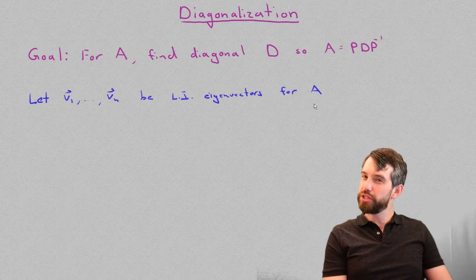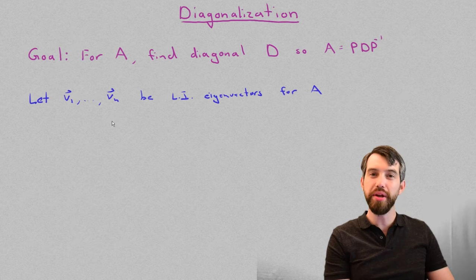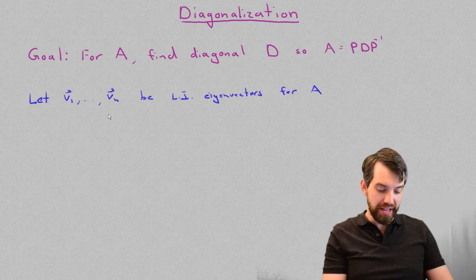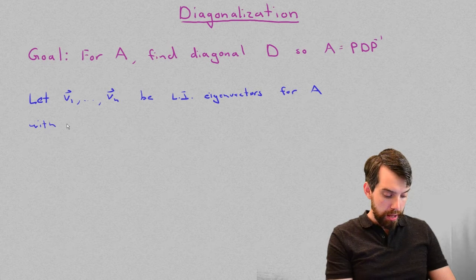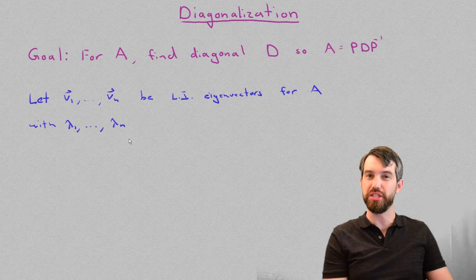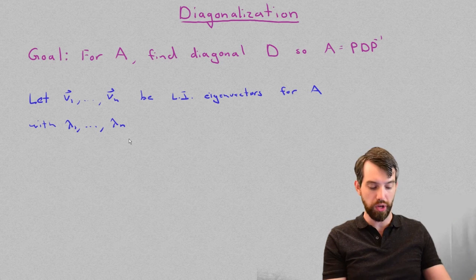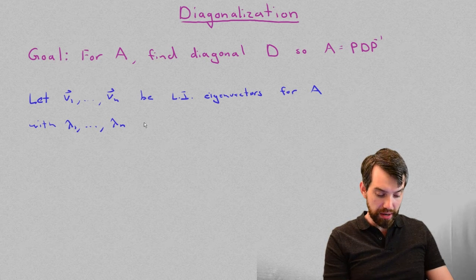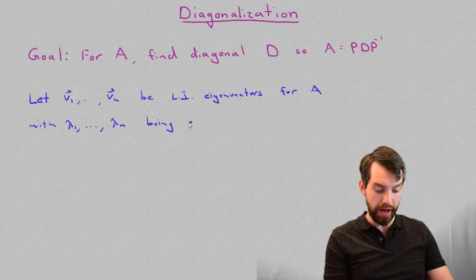And that associated to these n different eigenvectors are going to be n different eigenvalues. So they are going to have lambda 1 all the way down to lambda n. And I mean them to be associated in this way. The first eigenvector gets the eigenvalue lambda 1 and so on. With lambda 1 down to lambda n, they are going to be eigenvalues.